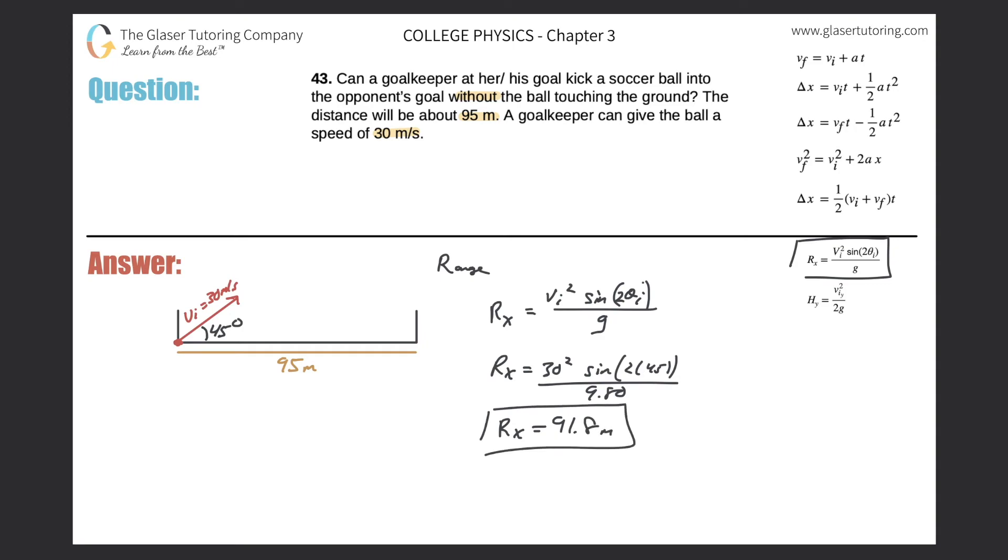So what does this mean? This means that looking back at the picture, if the goalkeeper were to impart a maximal angle of 45 degrees, meaning that's the angle that gives a maximum possible range, and he or she kicks the ball at an initial velocity of 30 meters per second, it will travel and it's going to fall just short. It's going to fall right short because we calculate the maximum is going to be 91.8 meters. So can the goalkeeper kick it into the opposing net without it touching the ground? No.